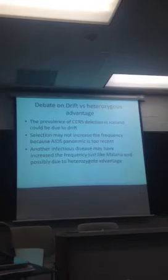Regarding CCR5 deletion: we talked about the CCR5 deletion conferring resistance to HIV infection. If there is a deletion, they have resistance to HIV infection. But in Iceland, there is a tremendous amount of CCR5 deletion alleles present in the population, possibly due to genetic drift. Selection is not going to increase the frequency due to AIDS pandemics because the AIDS pandemic is very recent — you cannot get a selection event fixed in a population that quickly. Another infectious disease may have increased the frequency, just like malaria, possibly due to heterozygous advantage. But we still don't know whether this is true.